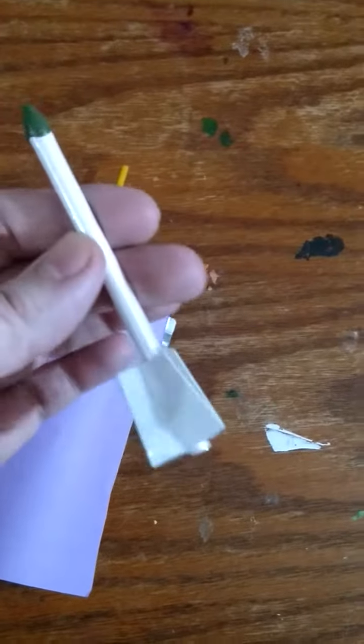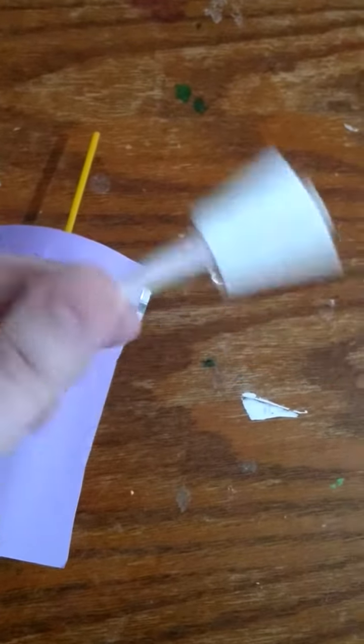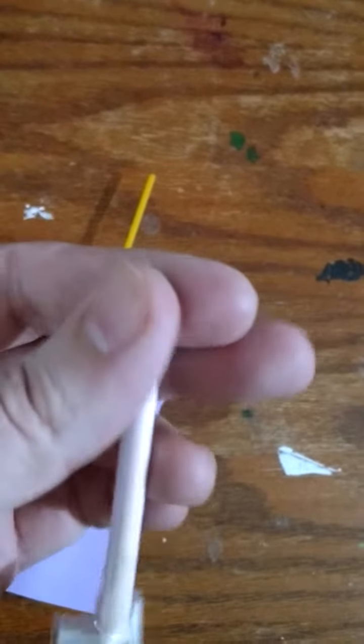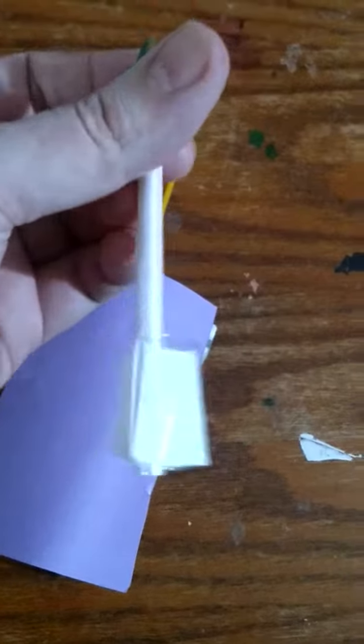Then you take a straw. I have this fancy pearlescent wooden one from another craft. I took a bit more clay on the top. Now you can use some paper like I did for the fins down here.